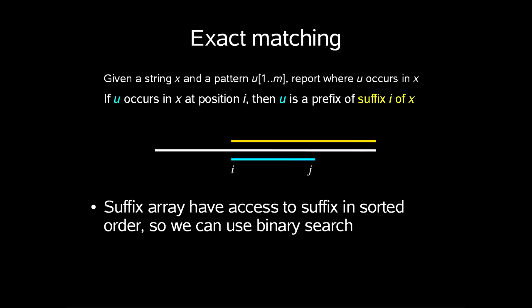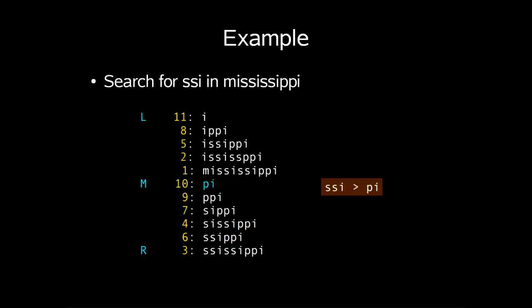In the suffix array, we have access to the suffixes in sorted order. Because of this, we can use a binary search to find a suffix which has u as a prefix if any. Just to show you an example, we search for SSI in Mississippi. So we keep searching for the middle, and compare the middle to our pattern to decide where we would want to go, either right or left. In the end, we eventually find a match for our pattern.